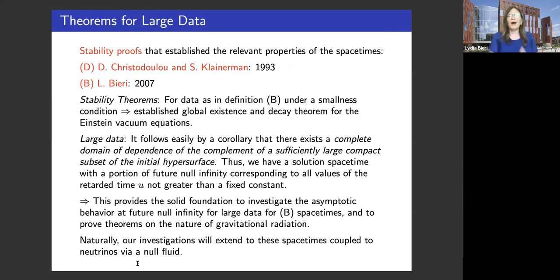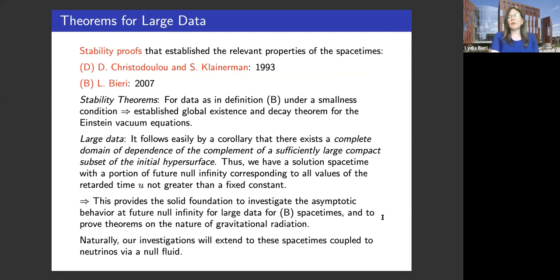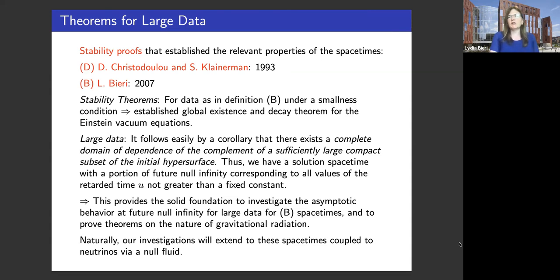For the B or D spacetimes, we have stability theorems giving us precise decay estimates. Why can we put in large data? It follows that you can prove a simple corollary: there exists a complete domain of dependence of the complement of a sufficiently large compact subset of the initial hypersurface. In other words, for this part of future null infinity, we have a complete understanding from these proofs of how these spacetimes look. So these spacetimes are a good playground to build on to investigate gravitational radiation for various systems.